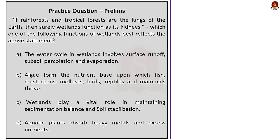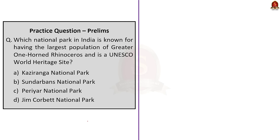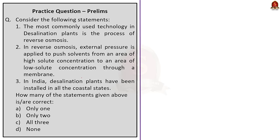We have come to the prelims practice question discussion. The first question is about wetlands: 'If rainforests and tropical forests are the lungs of earth, then surely wetlands function as its kidneys. Which of the following functions of wetlands best reflects the above statement?' This is a previous year question. The correct answer is Option D — aquatic plants absorb heavy metals and excess nutrients, so they function as the kidneys of earth. The second question: 'Which national park in India is known for having the largest population of Greater One-Horned Rhinoceros and is also a UNESCO World Heritage Site?' The answer is Option A — Kaziranga National Park. The third question is about reverse osmosis — the statement that reverse osmosis is the most commonly used technology in desalination plants is correct. The statement that external pressure is applied to push solvents from high solute concentration to low solute concentration through a membrane is also correct. However, the statement that desalination plants have been installed in all coastal areas of India is incorrect. So the correct answer is Option B — only statements 1 and 2.